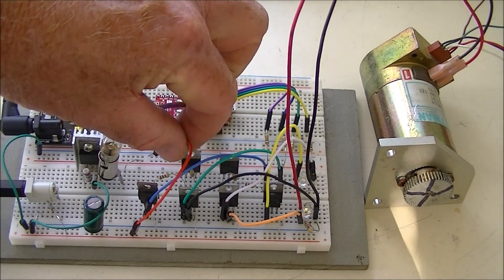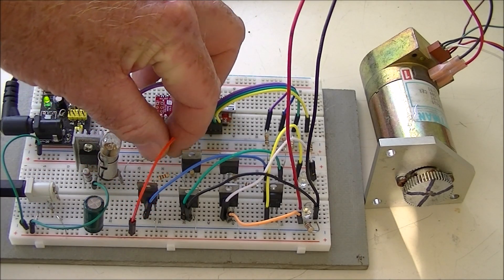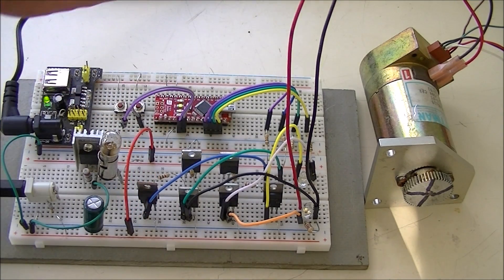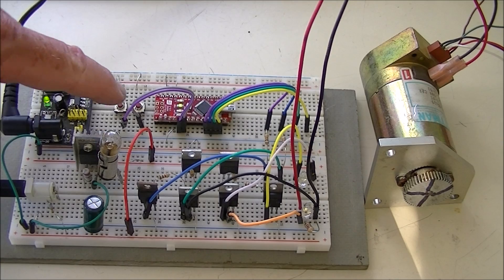I'm going to bypass the current limiting device. Now when you cut it on you will see it take off at full speed.